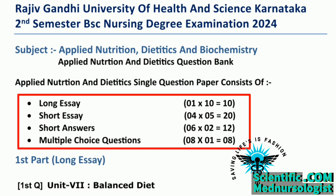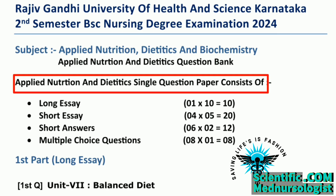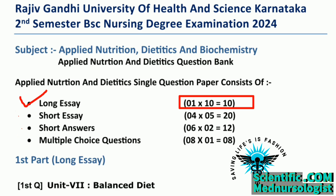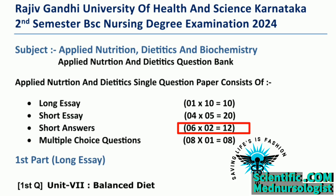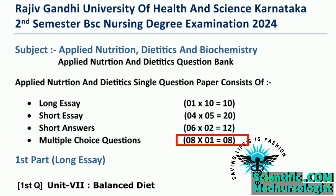The syllabus is discussed according to 10 marks, 5 marks, 2 marks, and 1 mark, or according to parts of the question paper. Our applied nutrition and dietetics subject question paper consists of 4 parts: Part 1 is the long essay part, which carries 10 marks per question. Part 2 is the short essay part, which carries 20 marks total, with 5 marks for each question. Part 3 is the short answers part, which carries 12 marks, with 2 marks for each question. Part 4 is MCQ, which carries 8 marks, with 1 mark for each question.